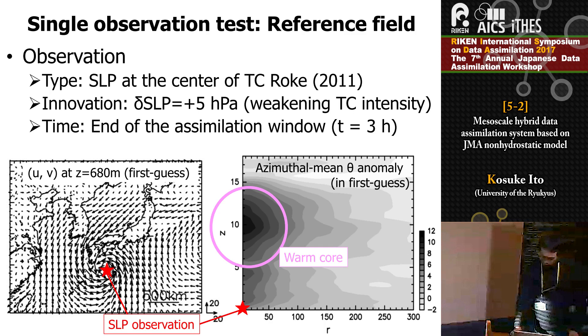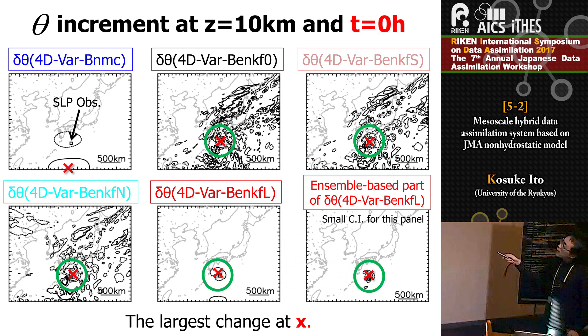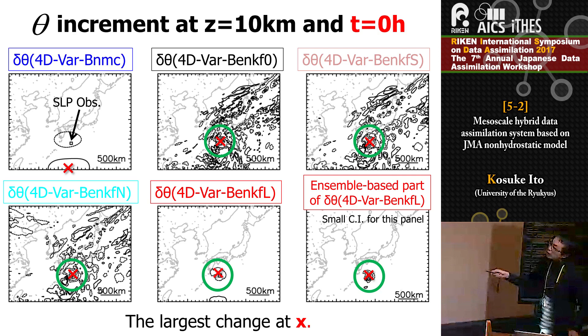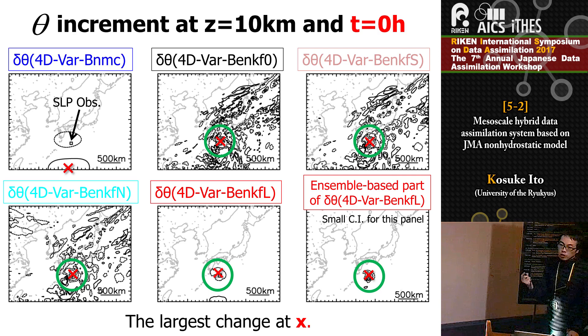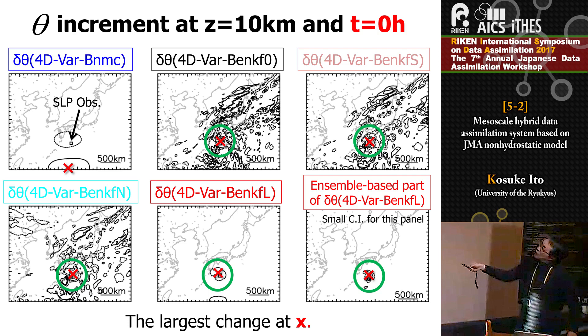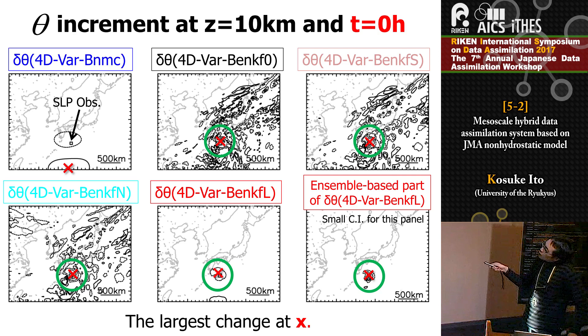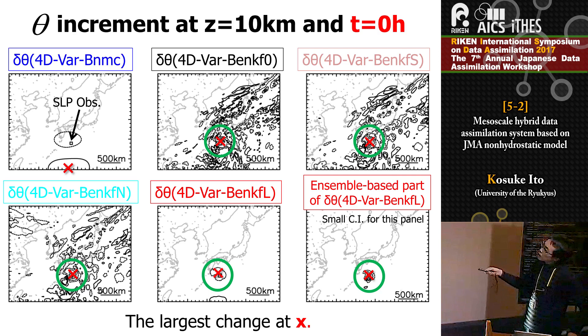This shows the potential temperature increment at 10-kilometer height at the beginning of the assimilation window. The largest change in each map is marked. In the hybrid systems, the largest changes are located near the observation, which is reasonable since large changes are expected in the upper troposphere of a tropical cyclone. But in the 4DVar BNMC system, the largest change happens elsewhere. There are also several spurious patches except in 4DVar BNMC-L, likely due to sampling noise since we use only 15 members.